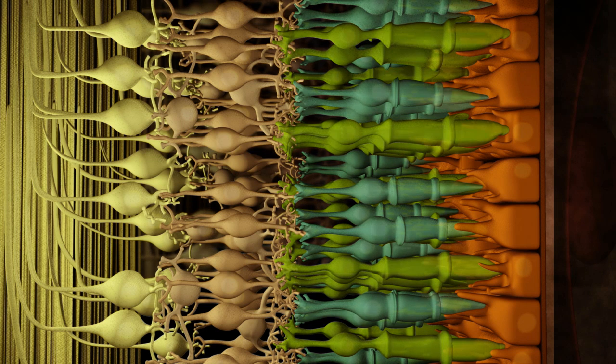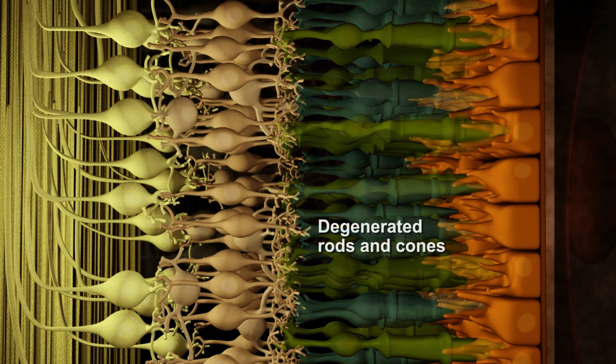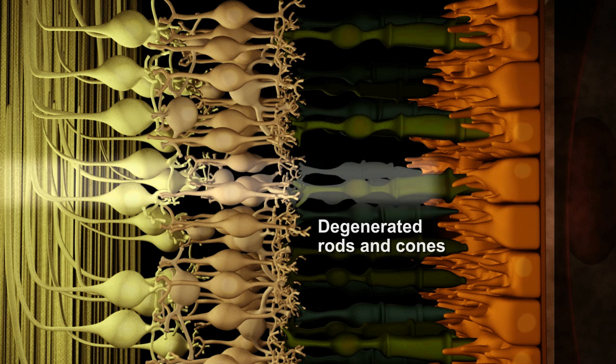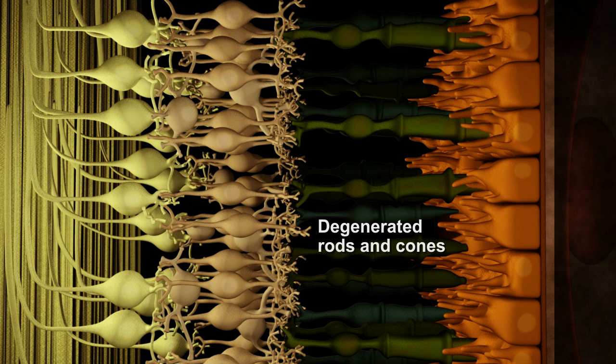Degenerative diseases of the eye, such as retinitis pigmentosa, affect the photoreceptors and cause damage to this pathway of information in the retina leading to irreversible vision loss.